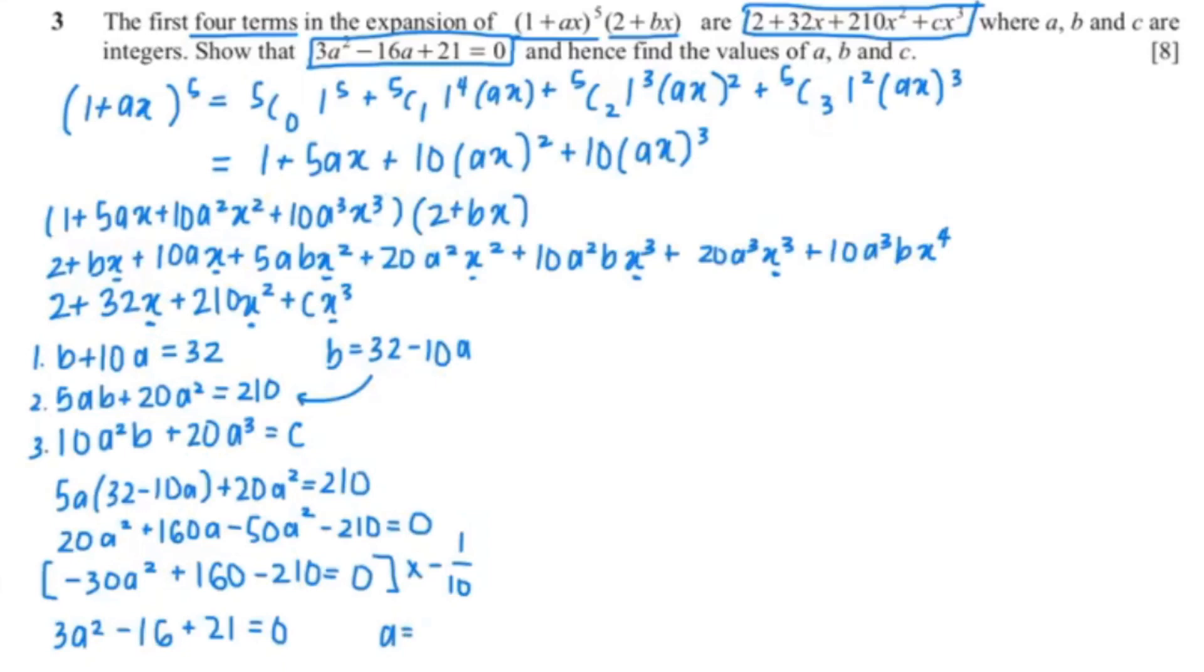Now I'm going to put this into my calculator giving me a equals 3 and a equals 7/3. But we're just going to take a equals 3 because the question says that a, b, and c are integers.